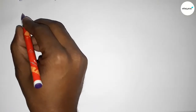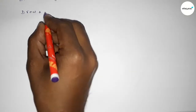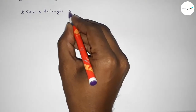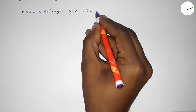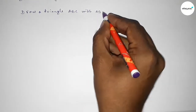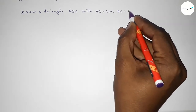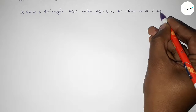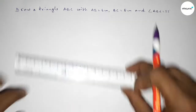Hi everyone, welcome to SISR classes. Today in this video we have to draw a triangle ABC with AB equal to 6 centimeters, BC equal to 8 centimeters, and angle ABC equal to 55 degrees. So let's start the video.